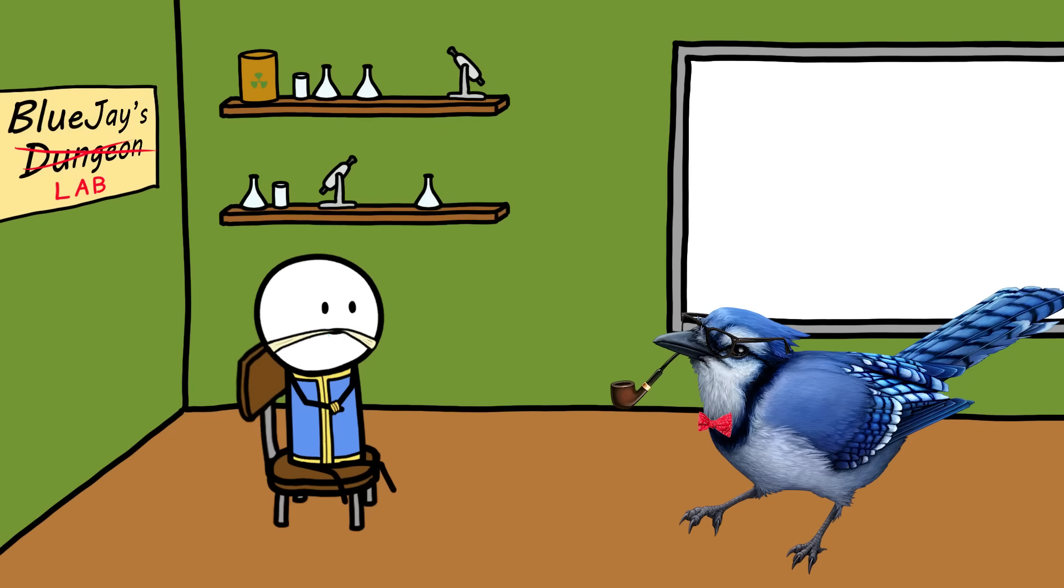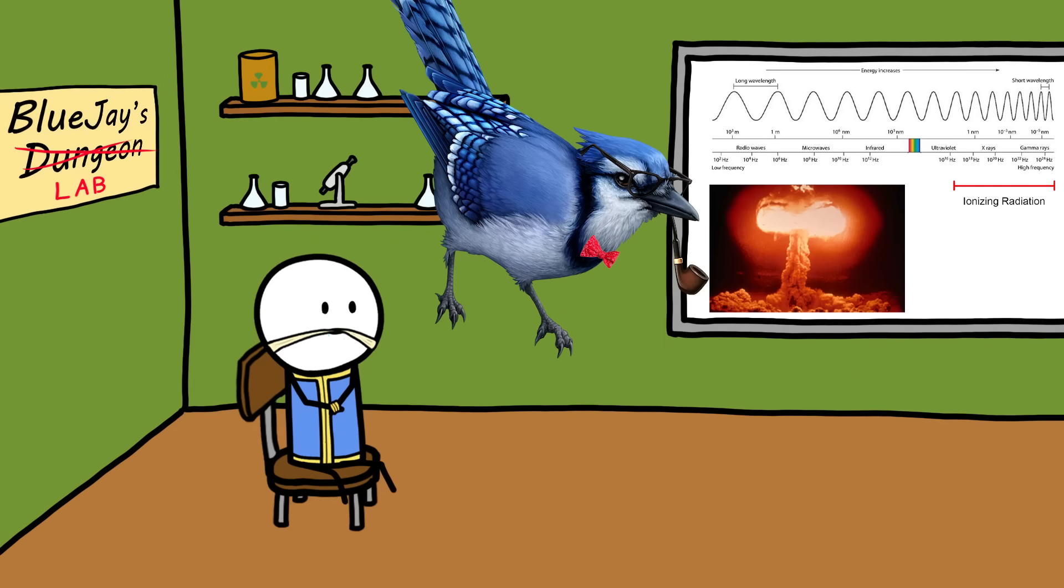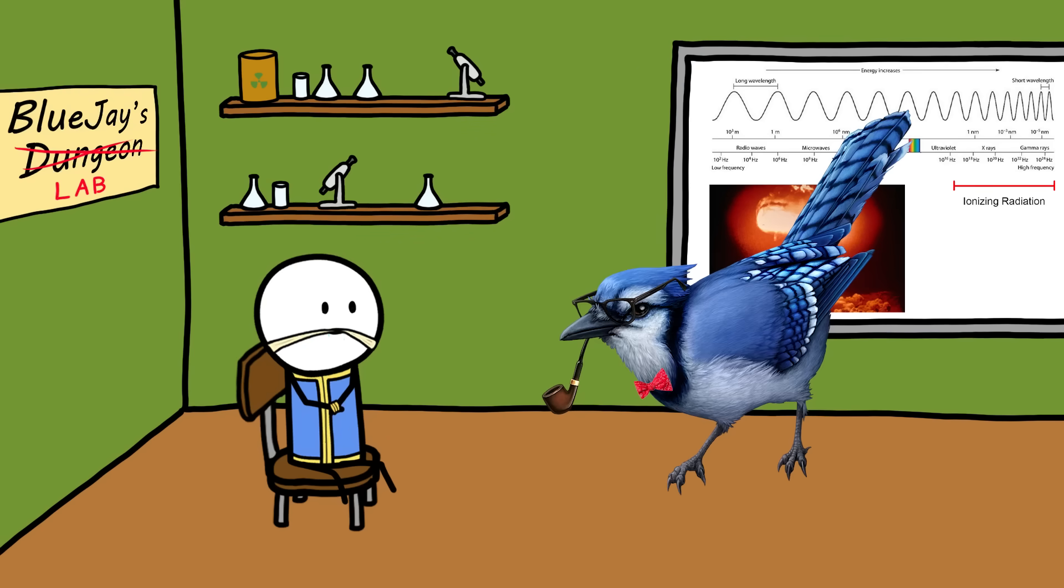Ionizing radiation includes the high-frequency end of the electromagnetic spectrum and all types of nuclear radiation, which we'll get to later. And it's typically what people think of when they hear the word radiation. Okay, so I'll just avoid ionizing radiation then. Easy.